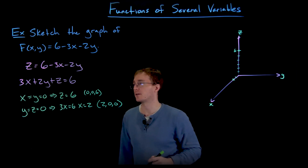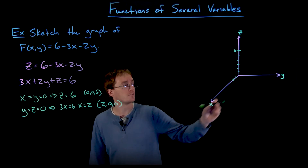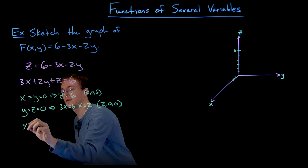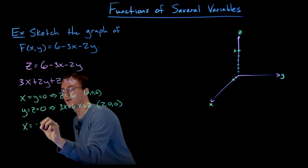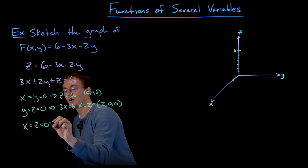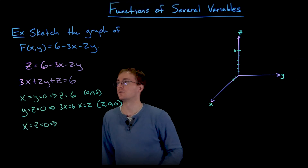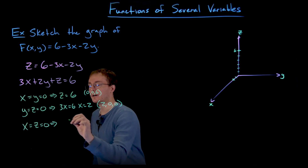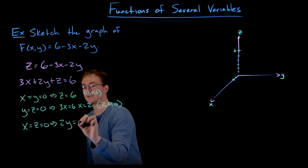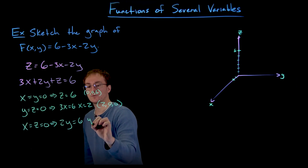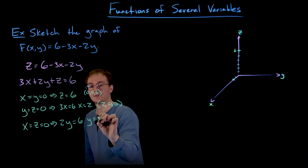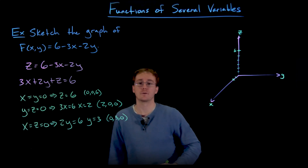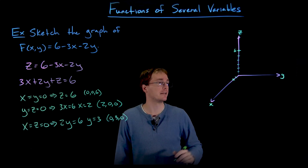To get our third point, we find the y-intercept. The y-intercept occurs when x and z are both equal to zero. Setting x and z to zero in our equation, it becomes 2y equals 6, which tells us y equals 3. So we have the point (0, 3, 0) on the graph of our plane as well.